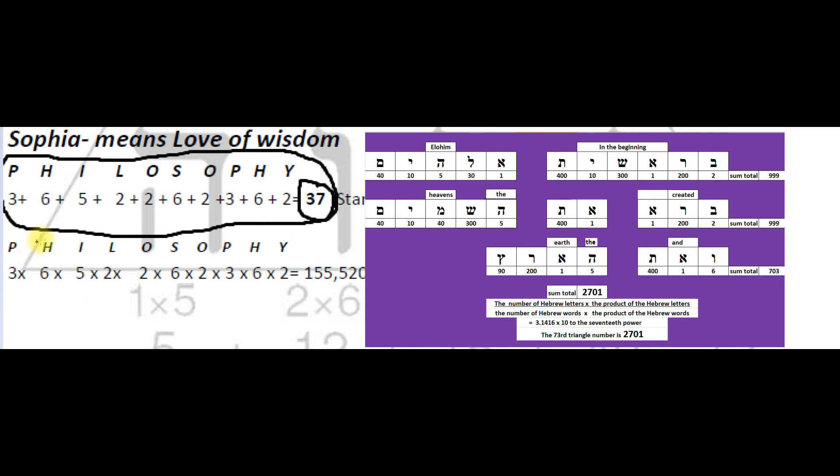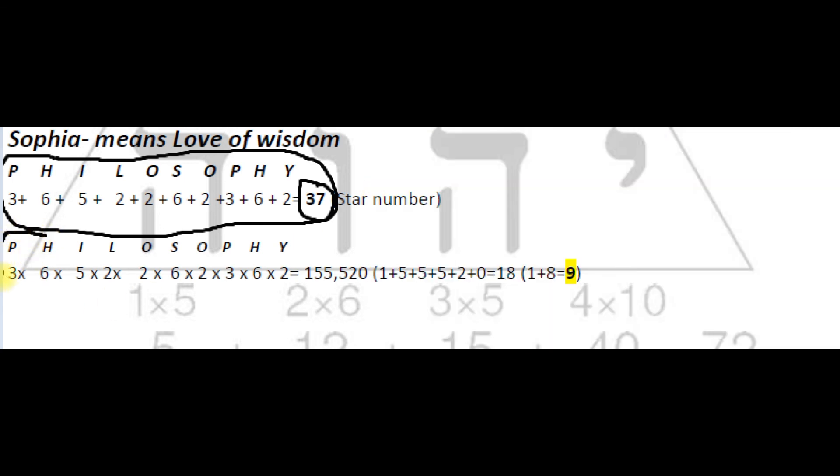The product of philosophy equals 155,520 having a digital root value of nine. Thanks for watching another Righteous World production, paradise yap.